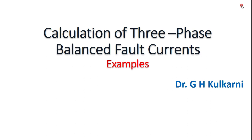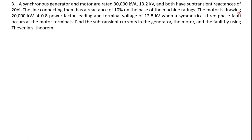Continuing with numericals on three-phase balanced fault currents, we have a third numerical that can be solved using the application of Thevenin's theorem. The problem statement is that a synchronous generator and a motor, both having 30,000 kVA (30 MVA), both having subtransient reactance of 20%, and these two machines are connected through a line having a reactance of 10% on the same base machine ratings.